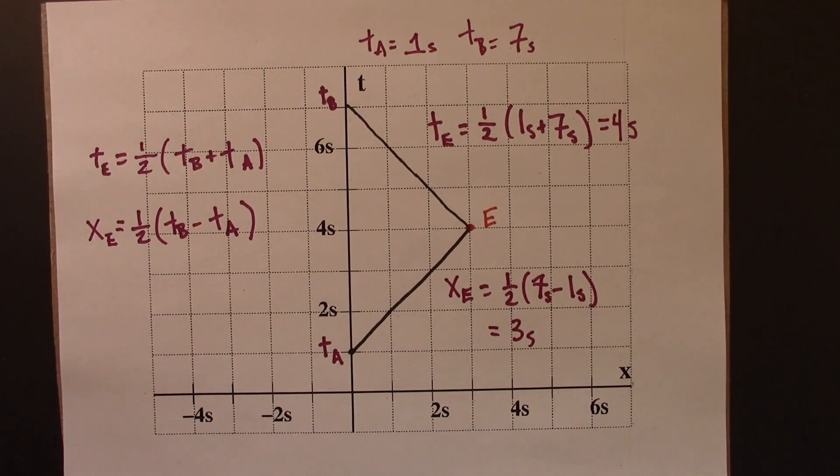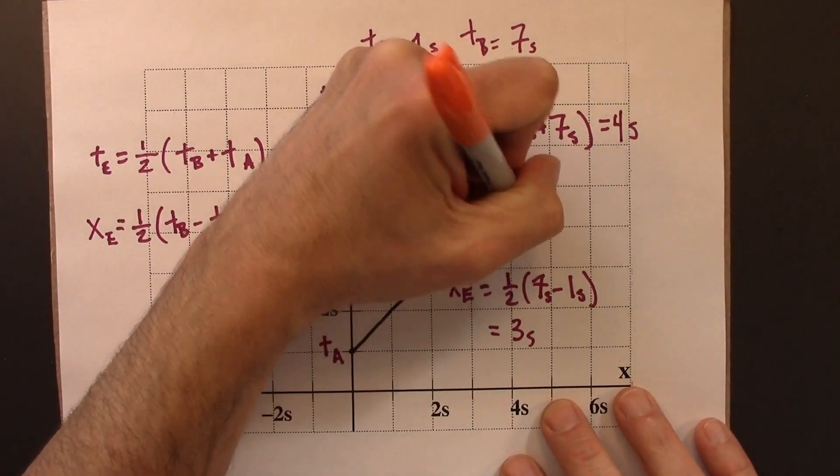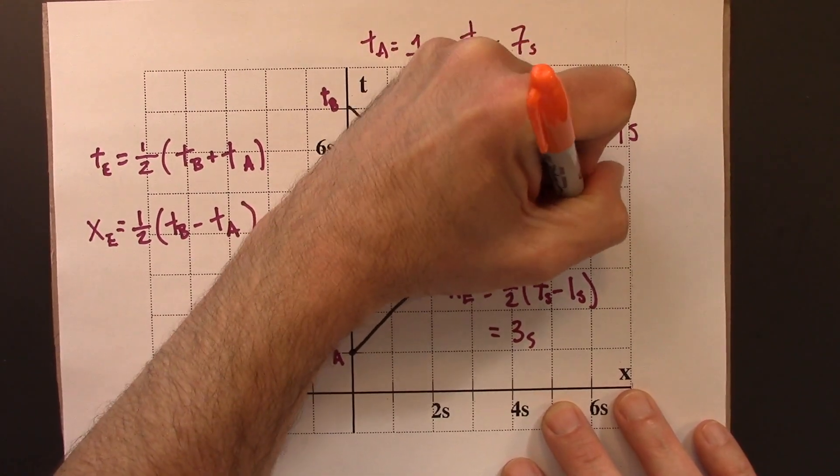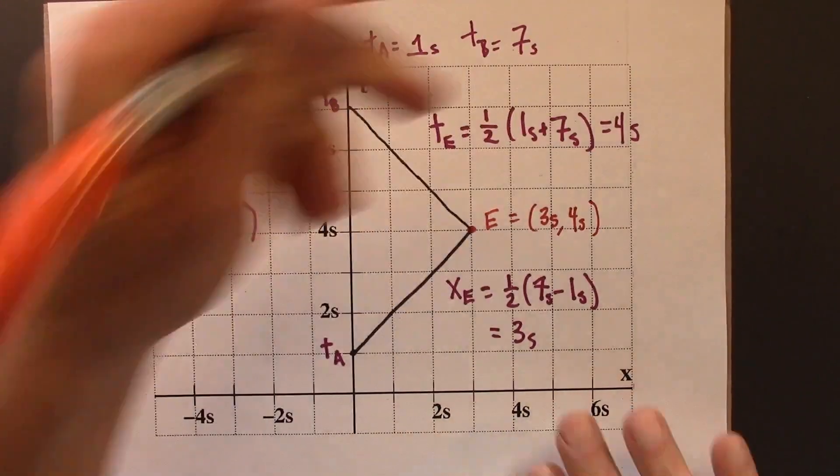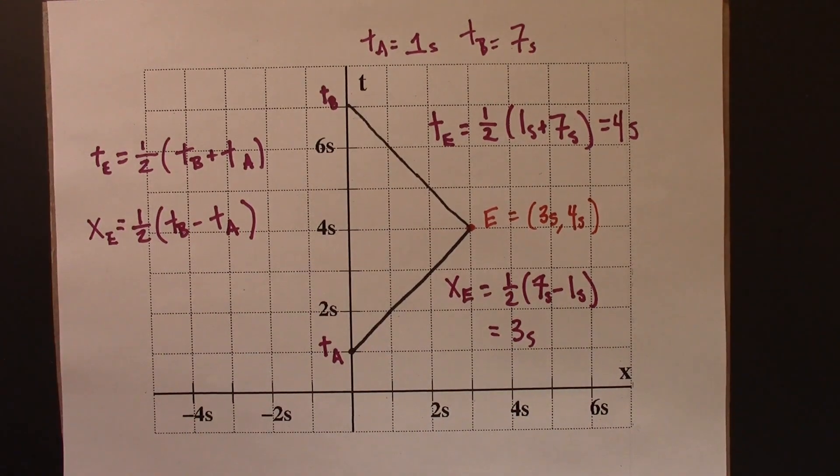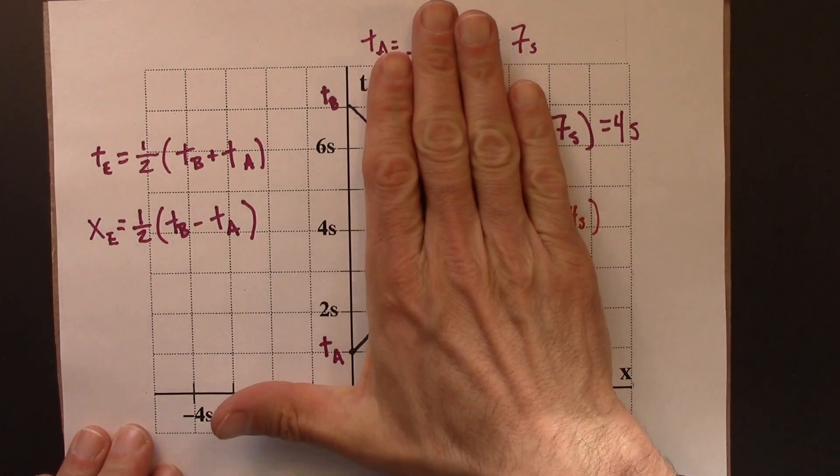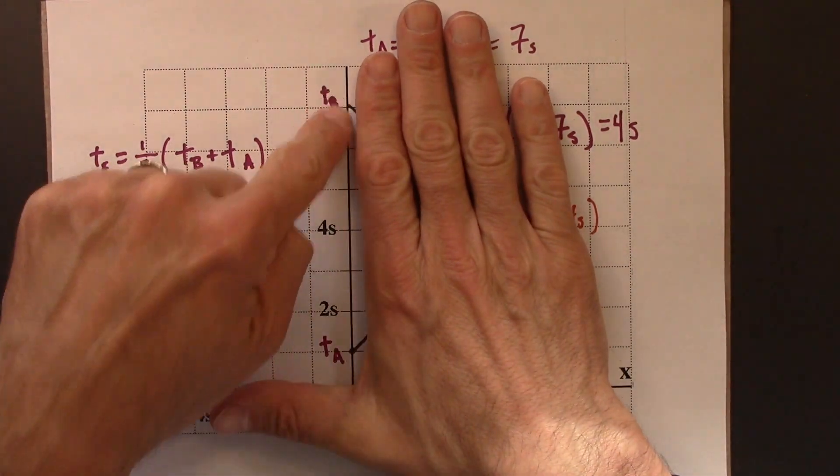So the space-time coordinate for E is three seconds, four seconds. Again, we could read that directly off this graph, but in a situation in which we couldn't see this directly, we could infer the space-time coordinates of event E just by using a clock that is located at the origin. So that's the radar method.